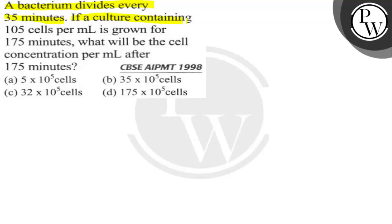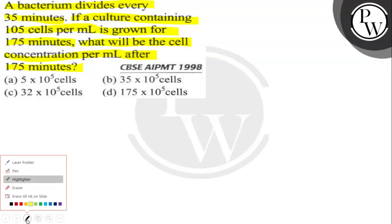A bacterium divides every 35 minutes. If a culture containing 10 to the power 5 cells per ml is grown for 175 minutes, what will be the cell concentration per ml after 175 minutes? The options are 5 into 10 to the power 5 cells, 35 into 10 to the power 5 cells, 32 into 10 to the power 5 cells, and 175 into 10 to the power 5 cells.